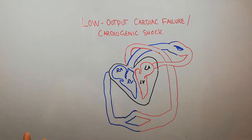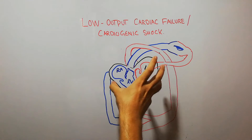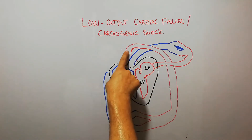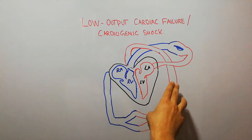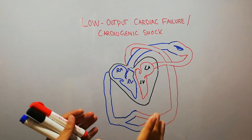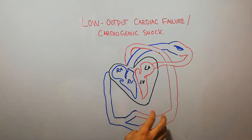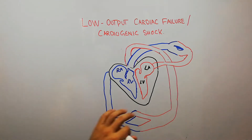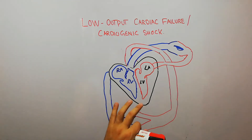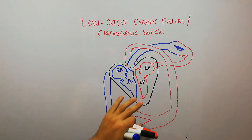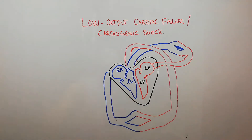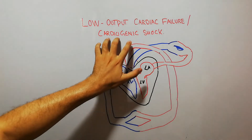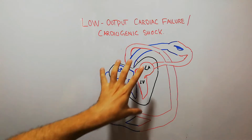If the heart is unable to pump properly, it will not be able to pump enough blood through the circulation. A proper amount of blood will not reach the different tissues and organs, and all the cells, tissues, and organs of the human body will suffer due to lack of blood and nutrients. This condition is known as cardiogenic shock.